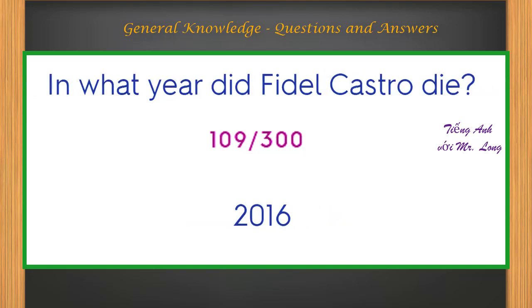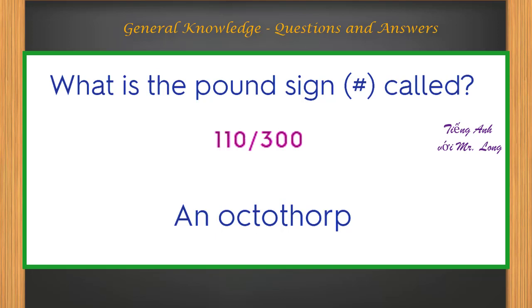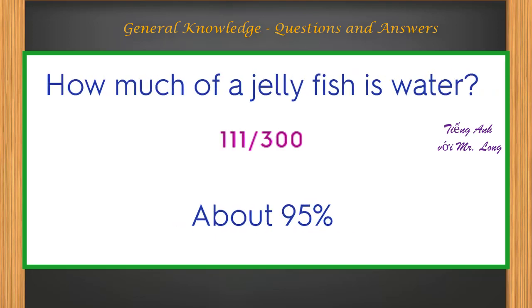In what year did Fidel Castro die? 2016. What is the pound sign called? An octothorp. How much of a jellyfish is water? About 95%.